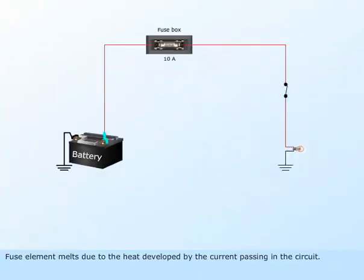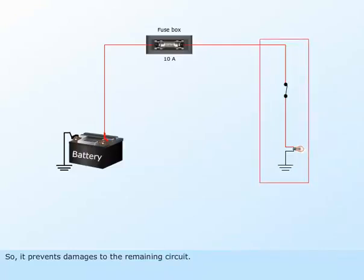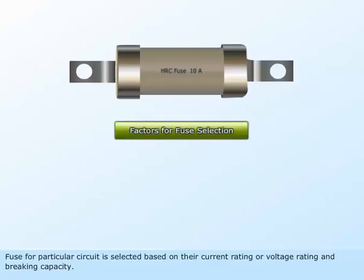Fuse element melts due to the heat developed by the current passing in the circuit, so it prevents damages to the remaining circuit. Fuse for a particular circuit is selected based on the current rating or voltage rating and breaking capacity.